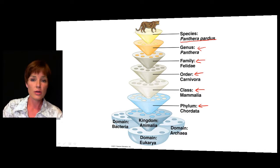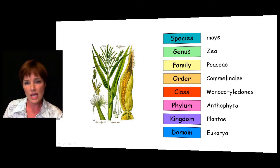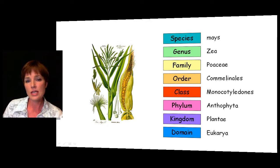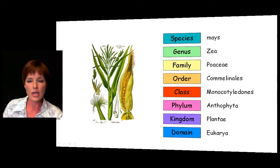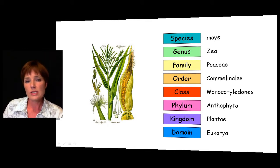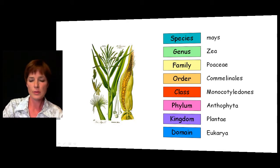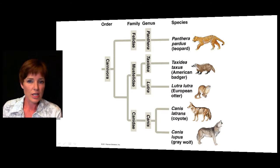Here's a plant example of the hierarchical classification. Starting at the bottom, we have Eukarya for our domain — the exact same domain as before — but in this case we have a different kingdom: kingdom Plantae, which is the plants. The breakdown continues until at the very top we have Zea mays, which is common corn. Again, only one species has that specific name, and then multiple species fall into a genus, multiple genera into a family, and so on.